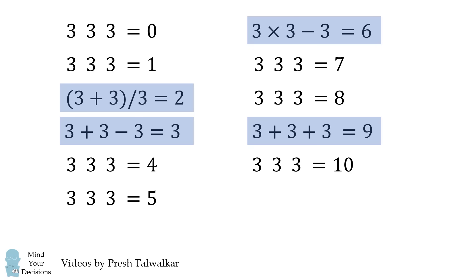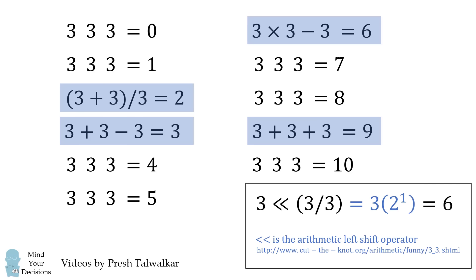To get to 6, we could do 3 times 3 minus 3. Or we could do 3 factorial minus 3 plus 3. One creative way that you can get to 6 is you'll do 3 left shifted by 3 over 3. This equals 3 times 2 to the power of 1, which is equal to 6. This less than less than is read as the arithmetic left shift operator. And you're shifting by one binary bit. This is something computer scientists will be familiar with. And I got the idea from the website Cut the Knot.